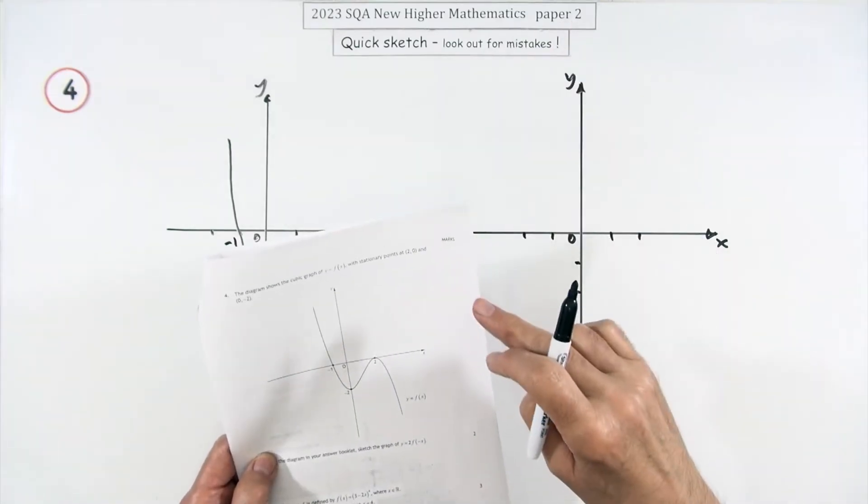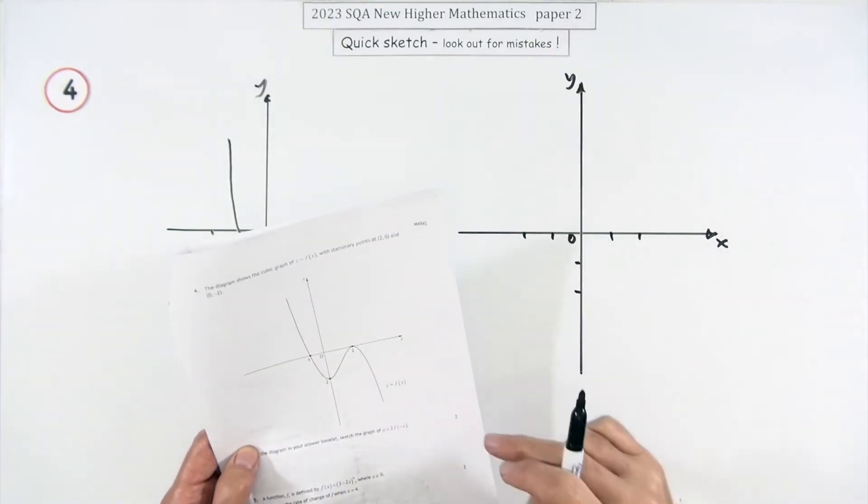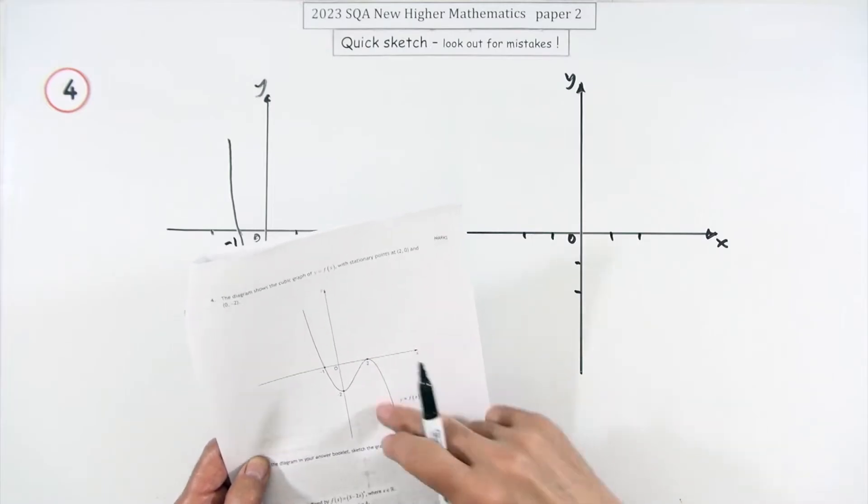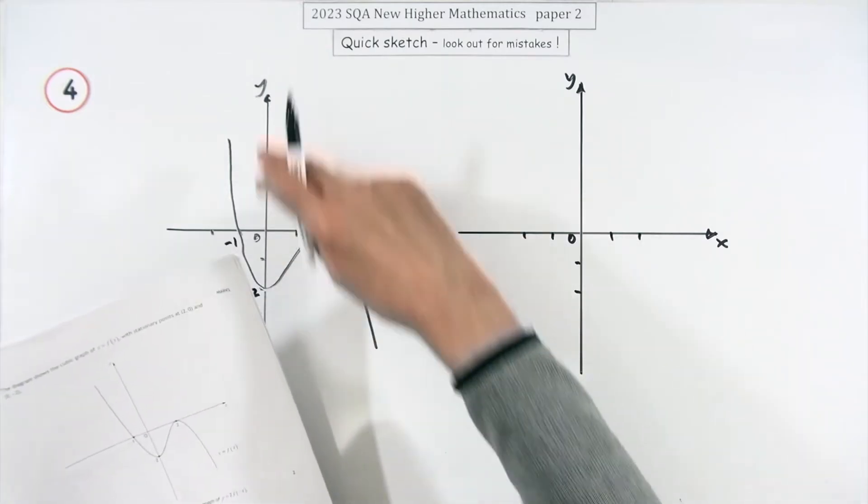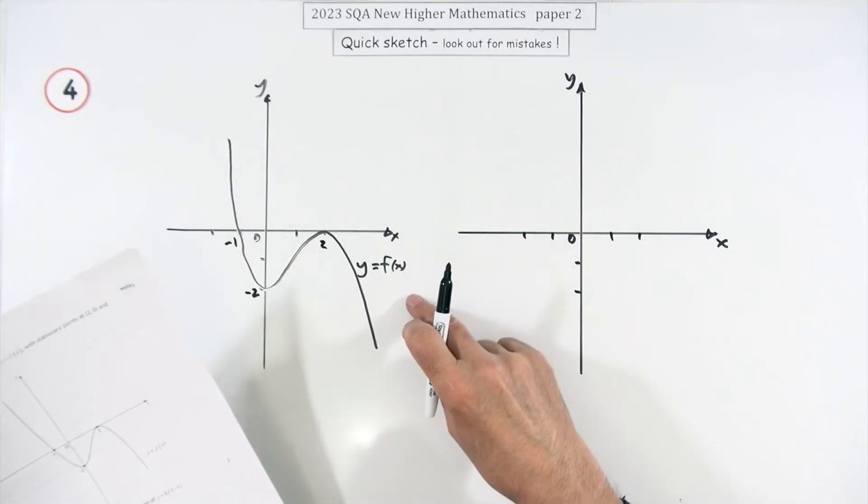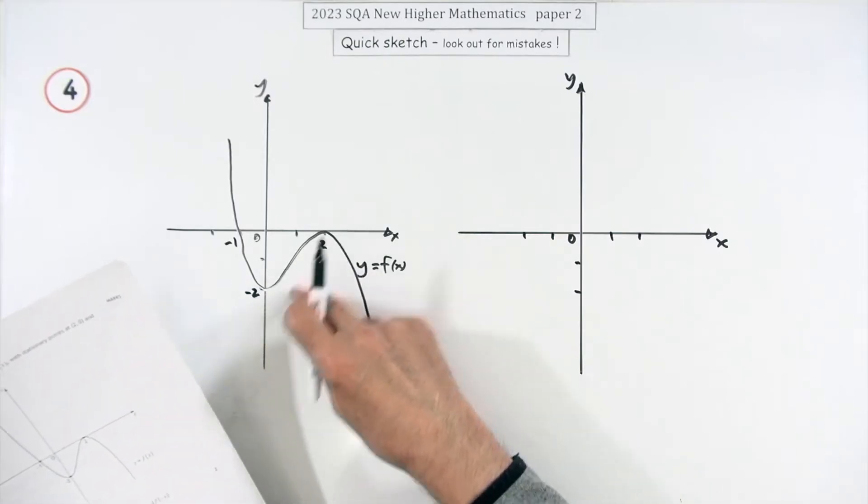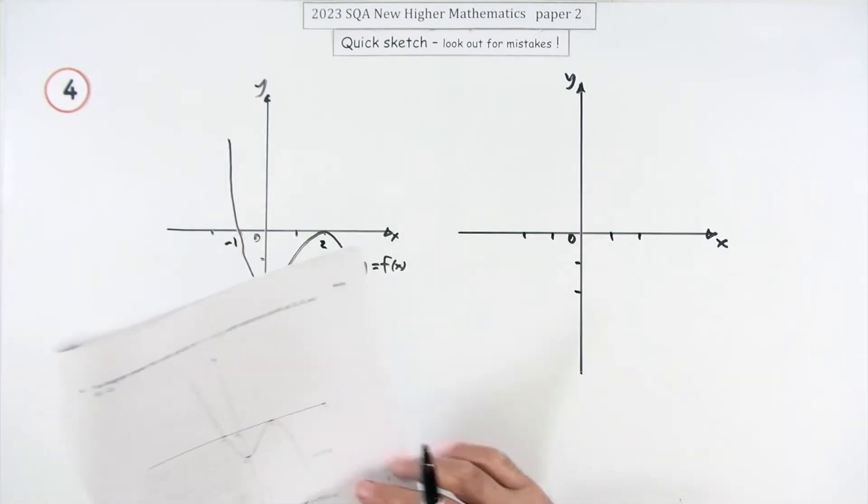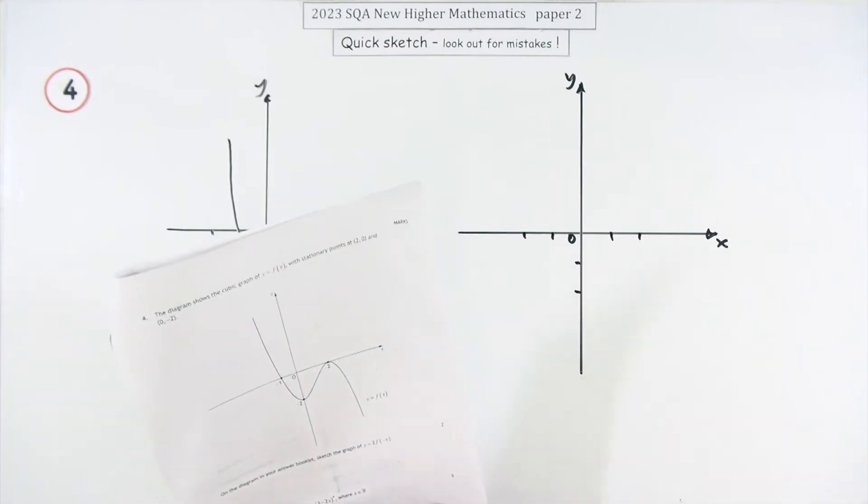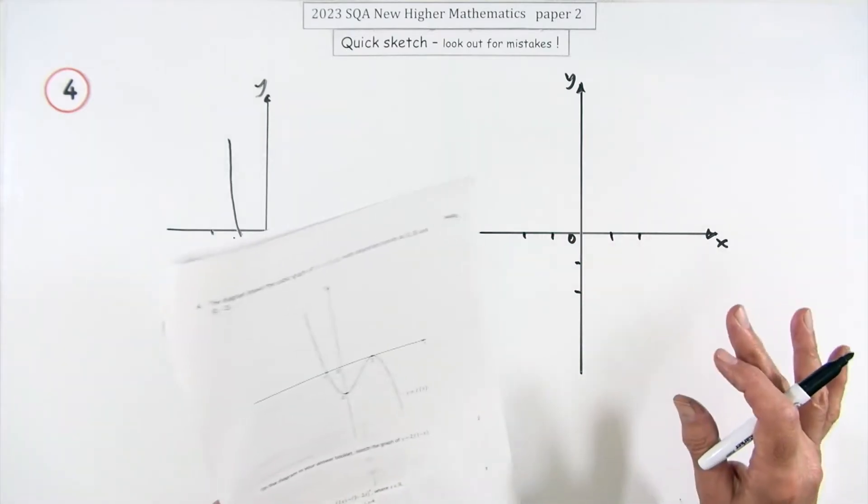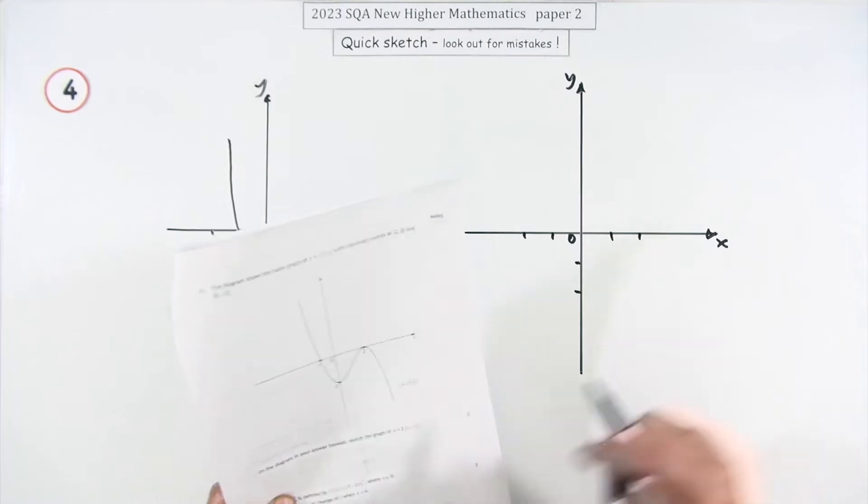So number four from paper two of the 2023 Higher Maths, just a little two mark question here. This diagram shows the graph of this cubic function with the stationary points at two and negative two, and cuts the axis at negative one. On the diagram in your answer booklet, sketch the graph of y = 2f(-x).